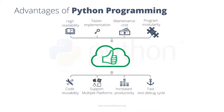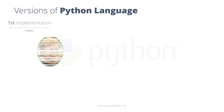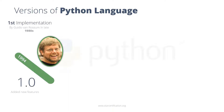Next, let us see the versions of Python. Python was first implemented by Guido van Rossum in the late 1980s. The first version of Python, version 1.0, was released in 1994.